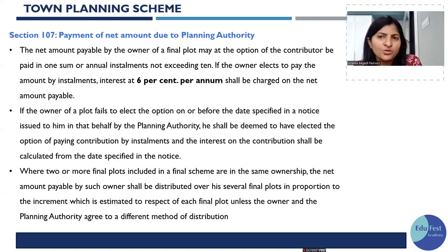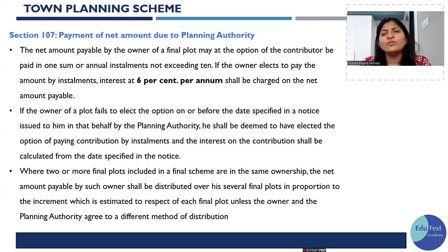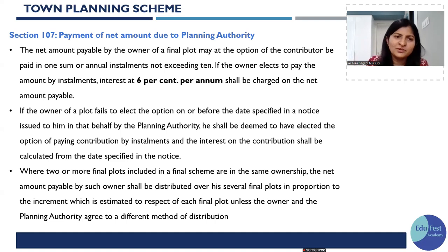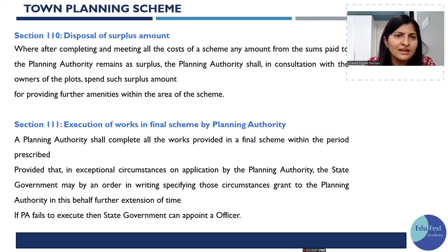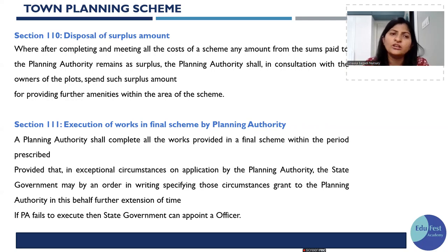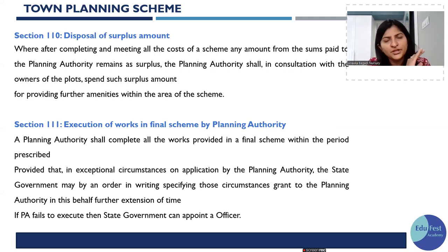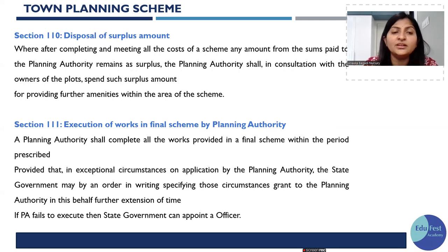The net amount payable by the owner of the final plot may, at the option of the contributor, be paid in one lump sum or in installments. The installments should not be more than 10. For installment payments, 6% per annum interest is charged. Whatever surplus amount is left with the planning authority shall, in consultation with the owner, be used to provide further amenities in the scheme. The planning authority shall complete all works provided in the final scheme within the stipulated time period.